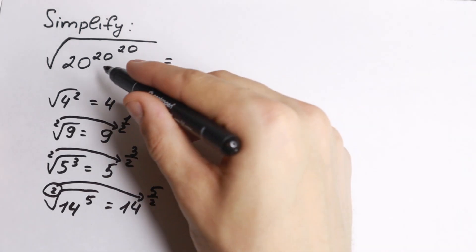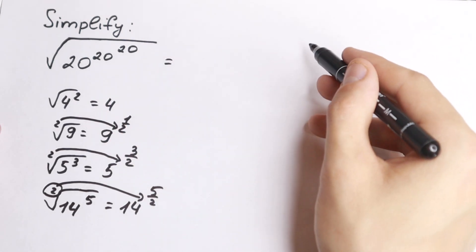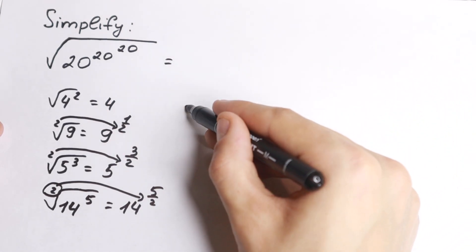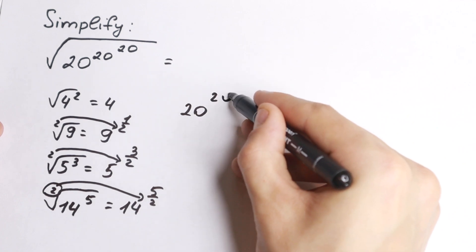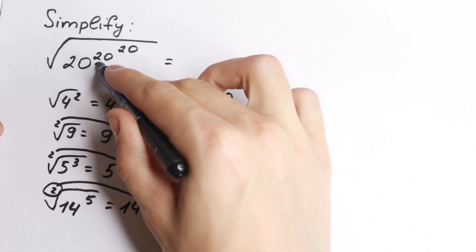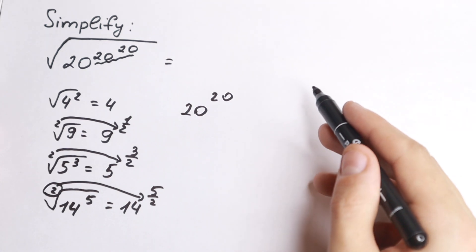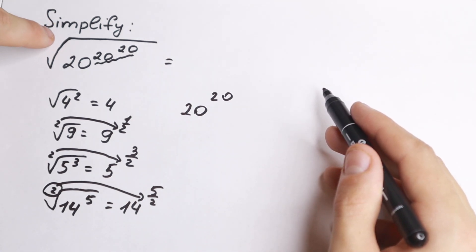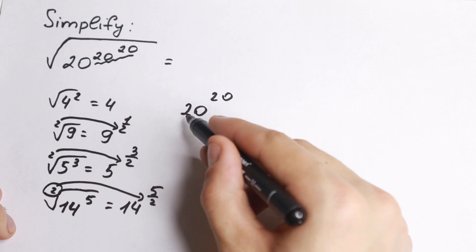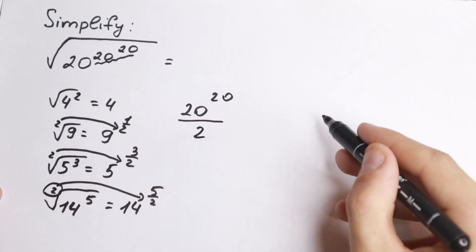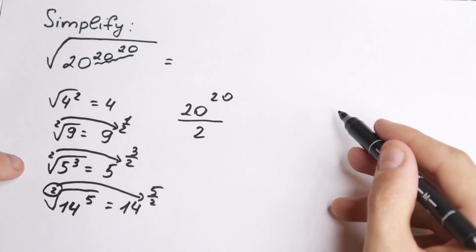So what number we have right here? We have 20. But what's the power of this 20? The power of this 20 is 20 to the power 20 right here. This is our power. And what is the power of the square root? We have square. So we divide this 20 to the power 20 by 2, as in this logic right here.